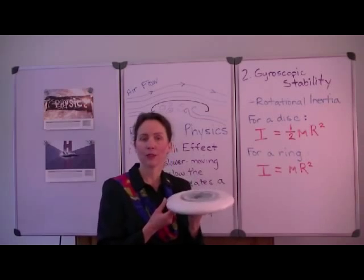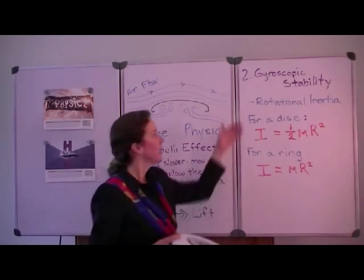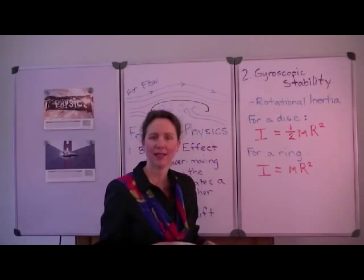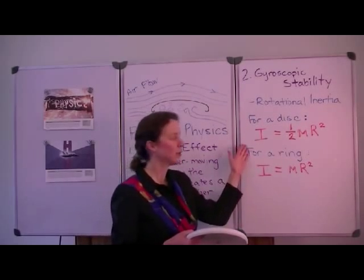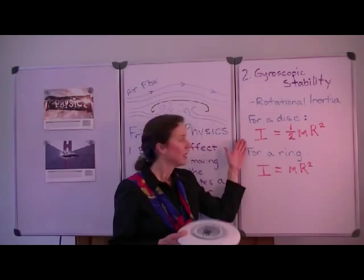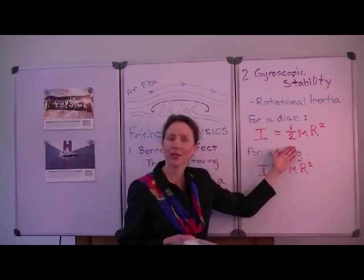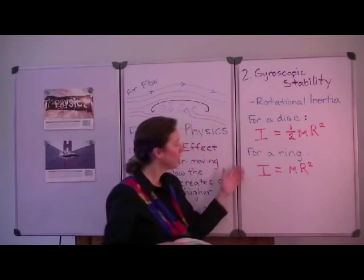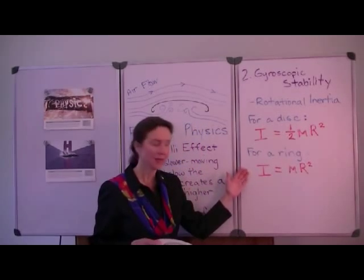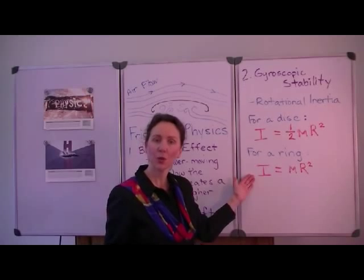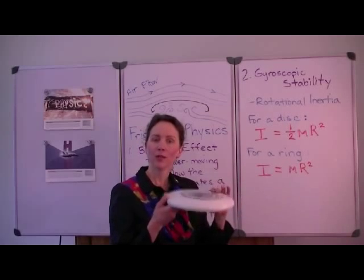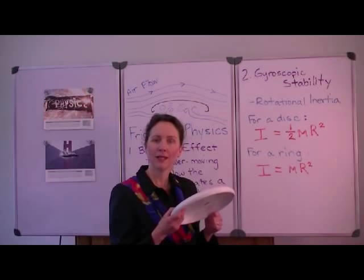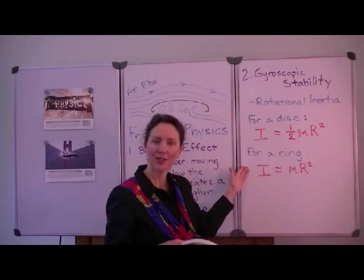Because the net force on the Frisbee is not directly in the center, it also needs gyroscopic stability, or rotational stability. This depends in large part on the rotational moment of inertia. For a disc, the rotational moment of inertia is calculated as one-half the mass times the radius squared. However, for a ring of the same mass, the rotational moment of inertia is twice as high. You may have noticed that the rim of a Frisbee feels relatively thicker — the mass is distributed in order to take advantage of this effect.